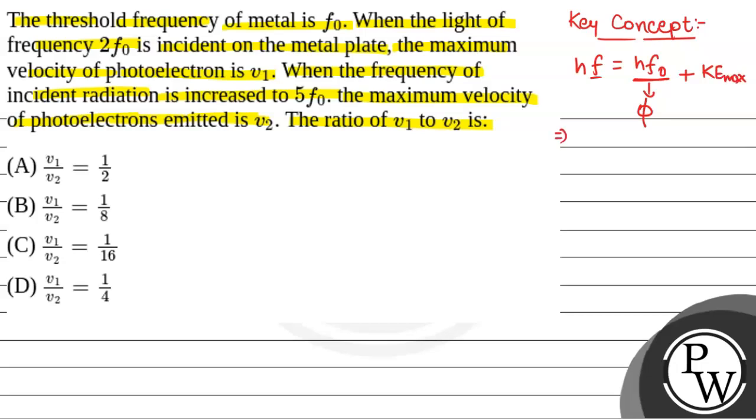Now, from here we have hf is equal to hf0 plus KE max, which is given by half m v squared. V is the maximum velocity.